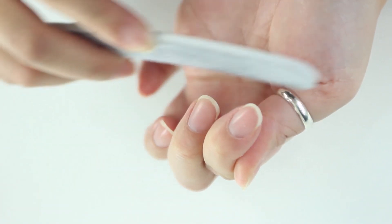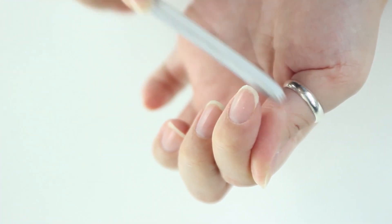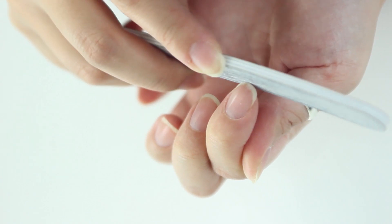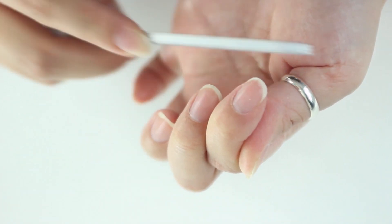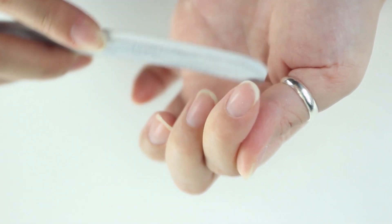One of the common mistakes that people do when they file their nails is they go back and forth. But that's not really good for your nails. It causes a lot of stress on your nails and causes breakage. So you want to go in one direction.